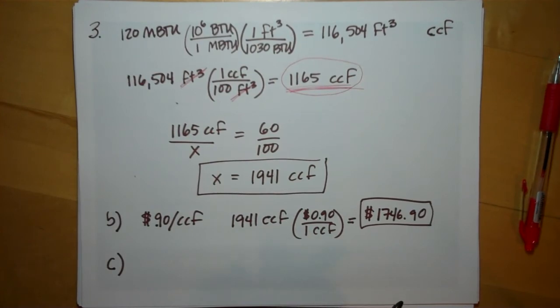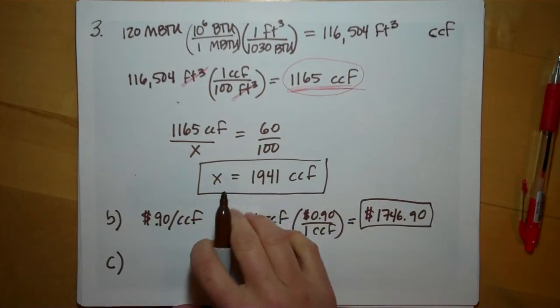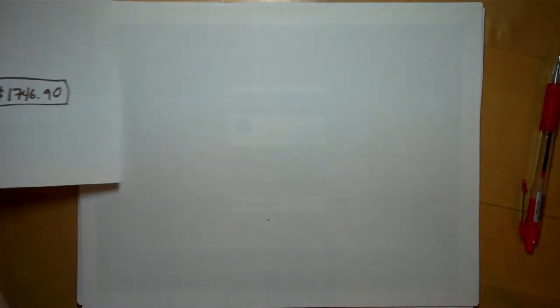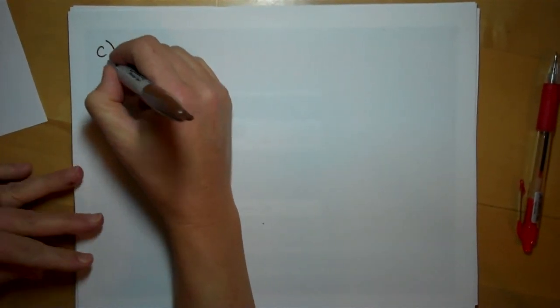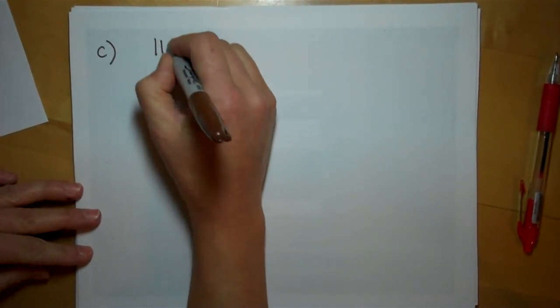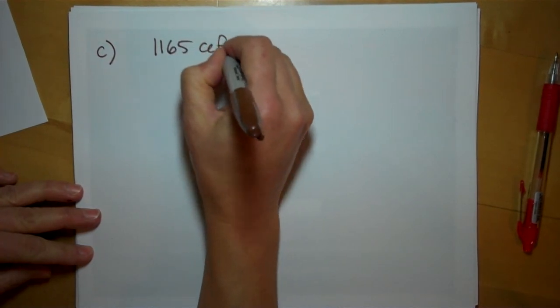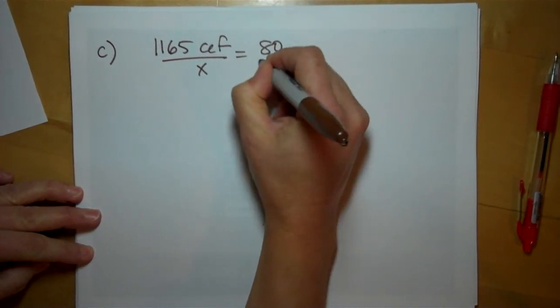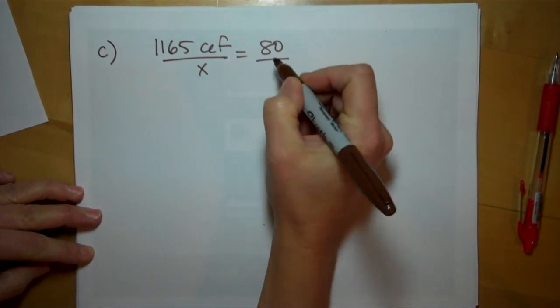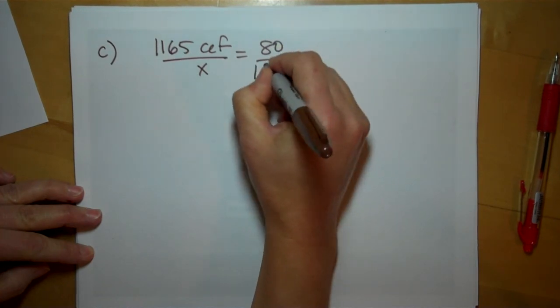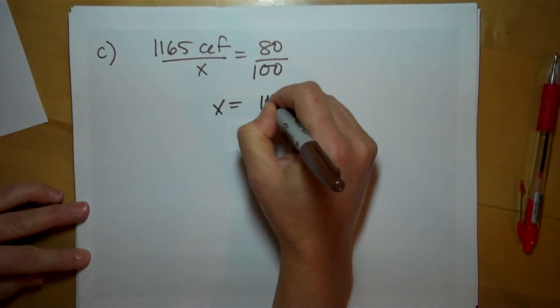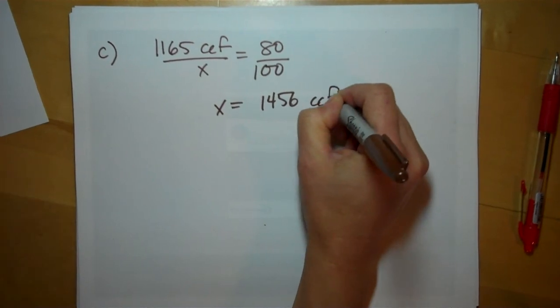All right, that's a great question. It's something people actually really do grapple with very often. If our furnace was 80% efficient, then instead of having to buy 1,941 CCF, we would have only had to buy 1,456 CCF.